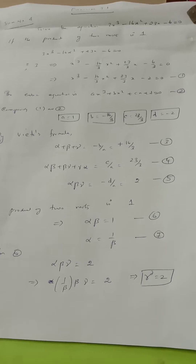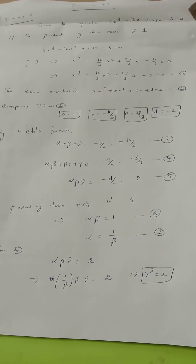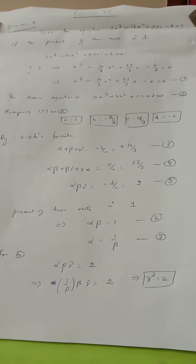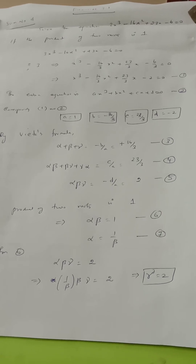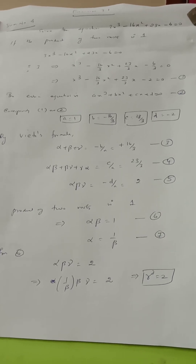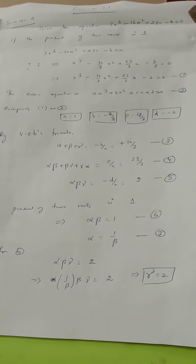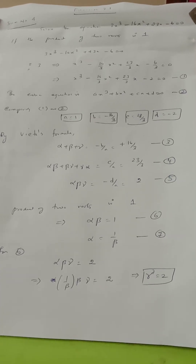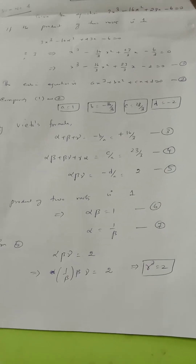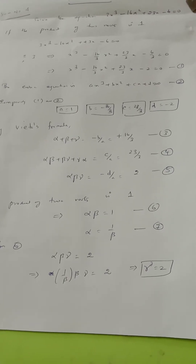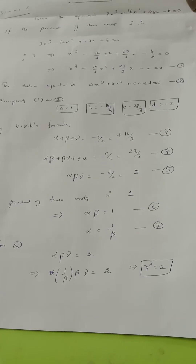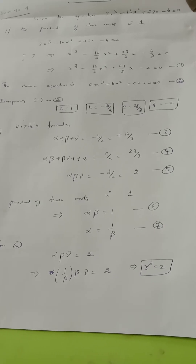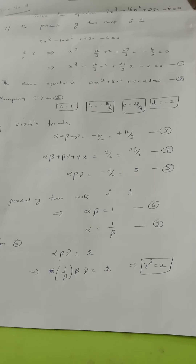We have a cubic equation. We will have two conditions: the product of 2 roots is 1, and the sum is 1. The equation is 3x cubed minus 16x squared plus 23x minus 6 equal to 0. Dividing through by 3, we get x cubed minus 16/3 x squared plus 23/3 x minus 2 equal to 0.